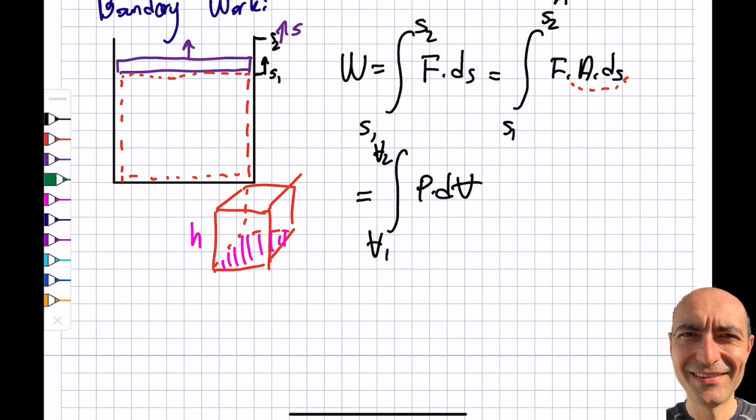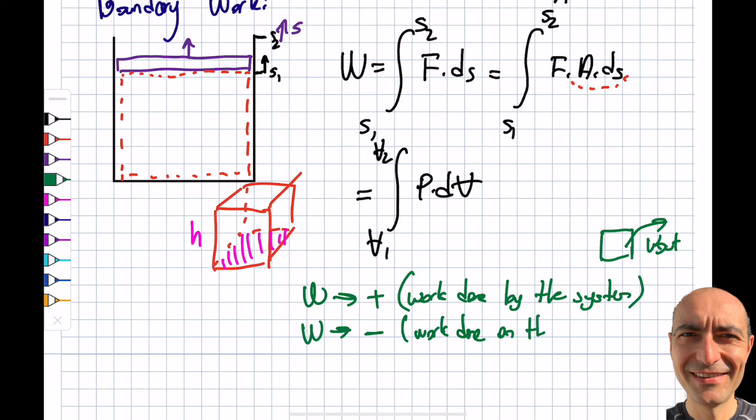Mathematically speaking, I'll get a positive sign if I have an expansion. That's work done by the system—I'm being consistent with the terminology I used. If this is my system, it's leaving the system: W out. I'll get a negative value if I'm compressing it. My v2 will be lower than v1, so I'll get a mathematically negative sign. This will be work done on the system.